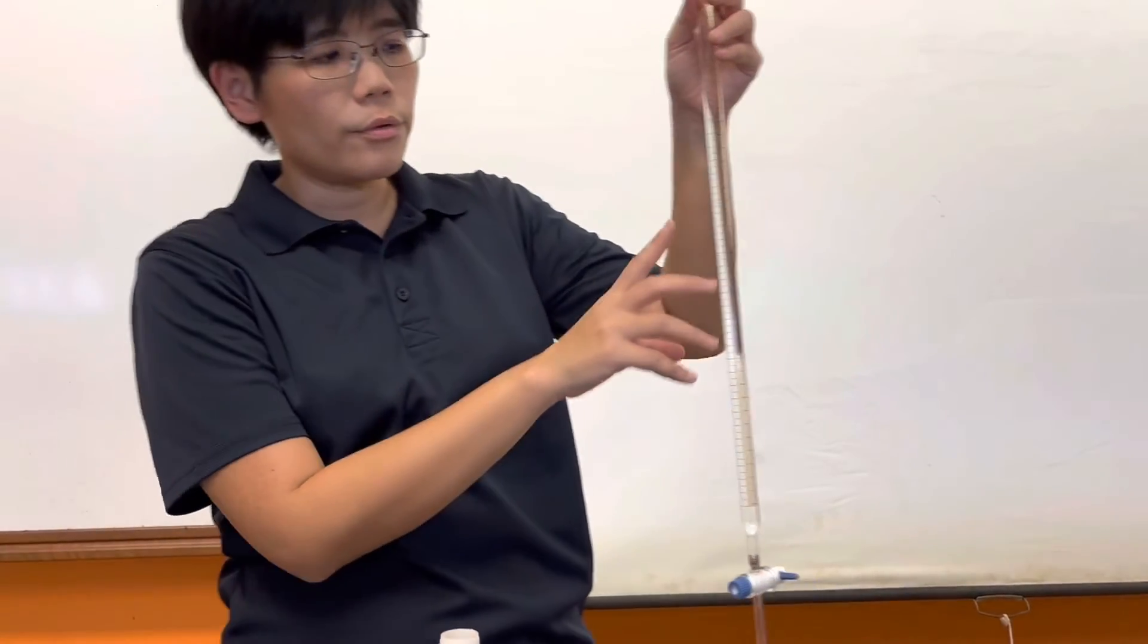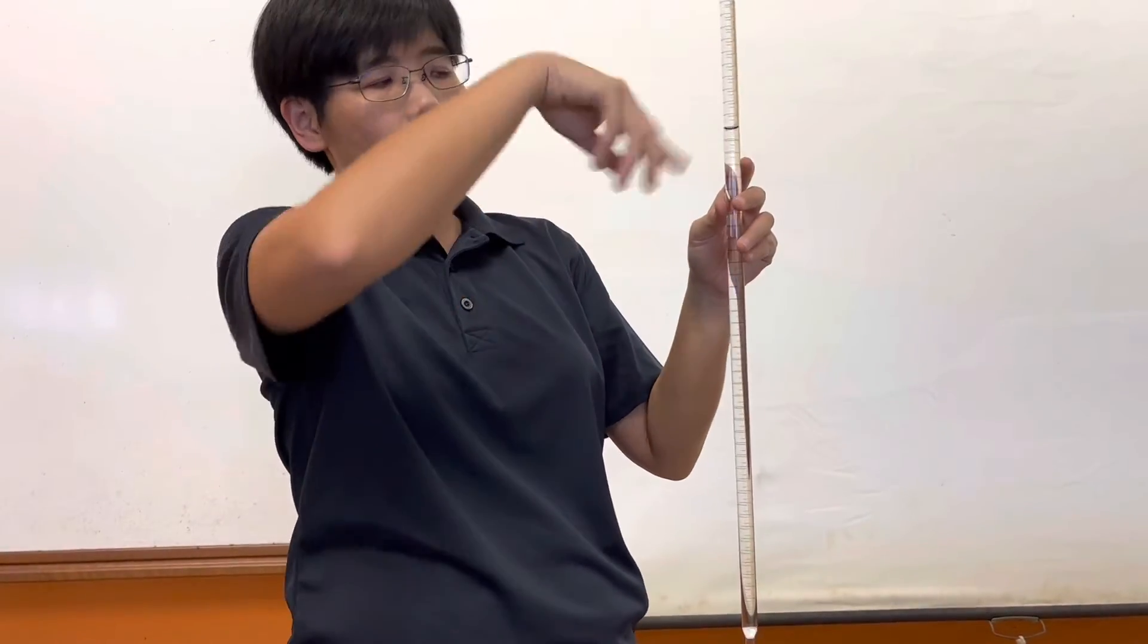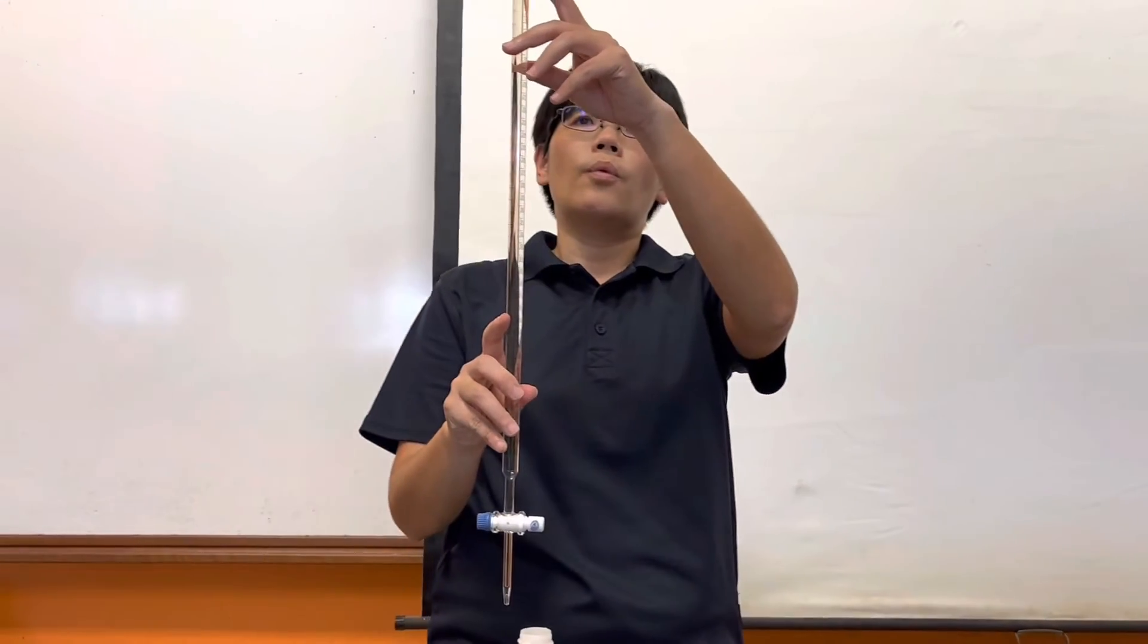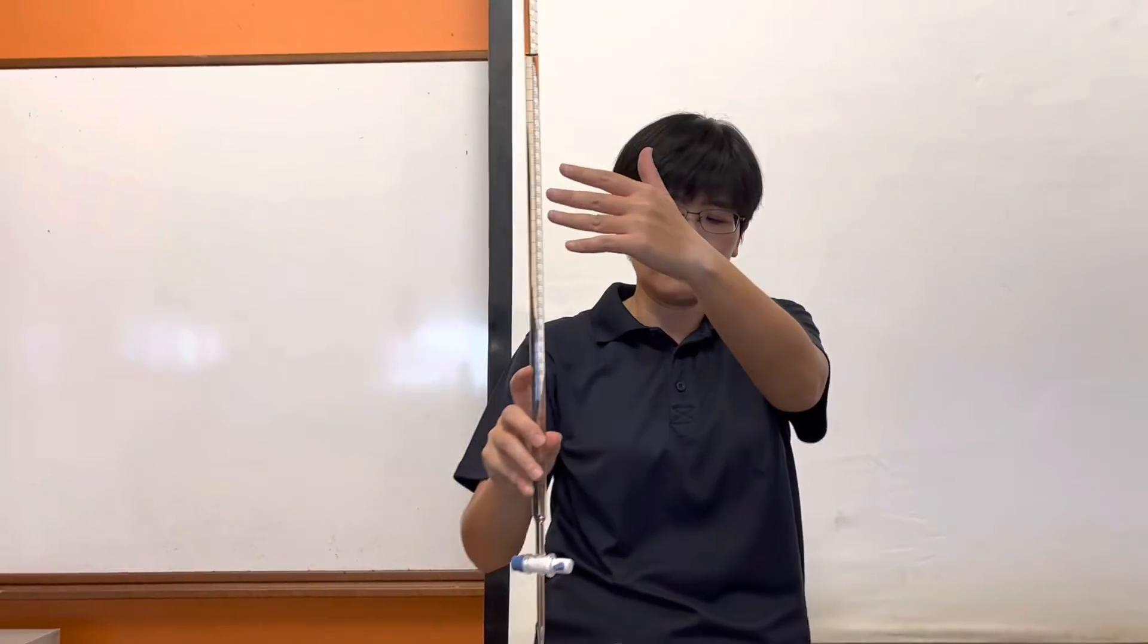Because we are only rinsing the burette, there is no need to read the meniscus or take the volume of the solution that we used. About half of the burette, or like what I have done, about three quarters of the burette will be more than enough.